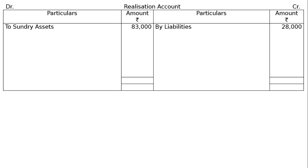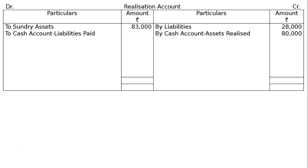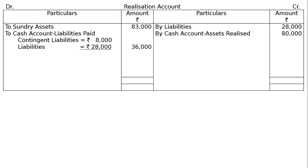In the realization account: by liabilities rupees 28,000, by cash account — assets realized rupees 80,000. A contingent liability of rupees 8,000 on account of bills discounted was paid by the firm, so cash account — liabilities paid — contingent liabilities rupees 8,000. Other liabilities rupees 28,000. Total payment is rupees 36,000.